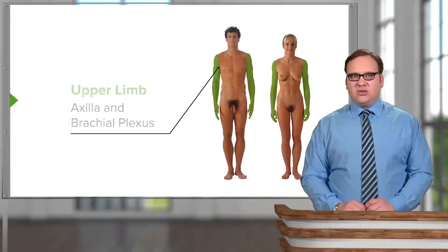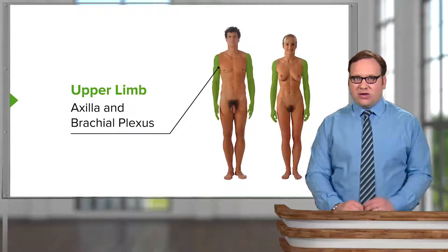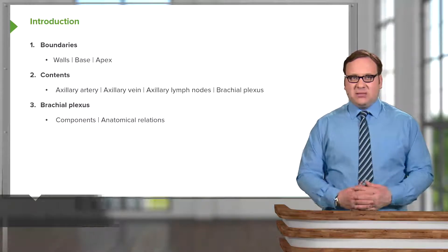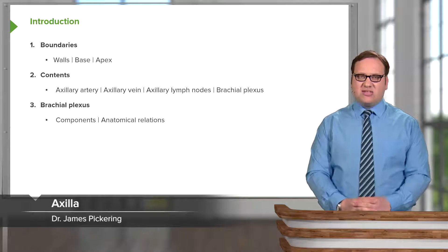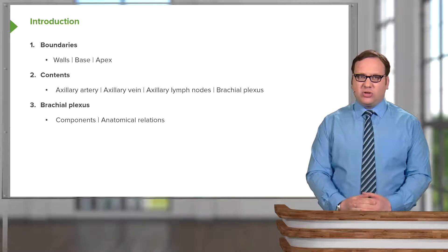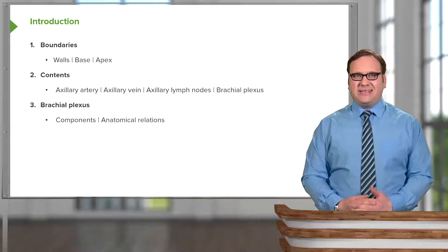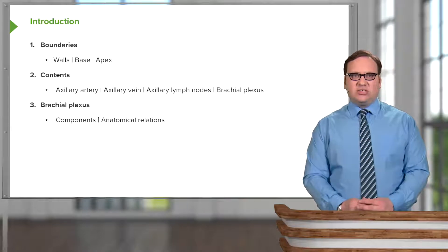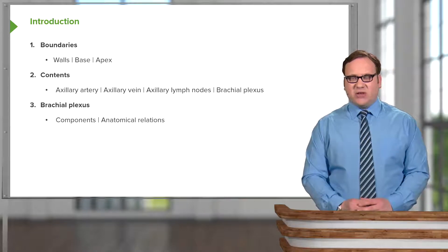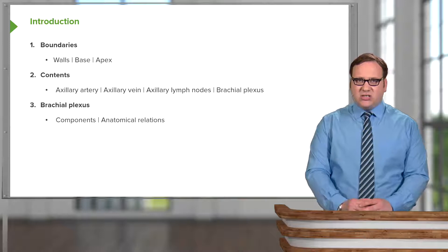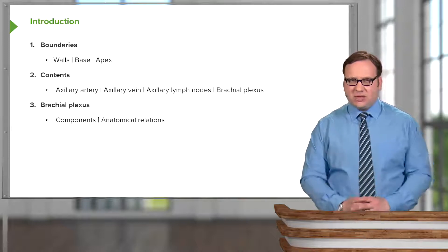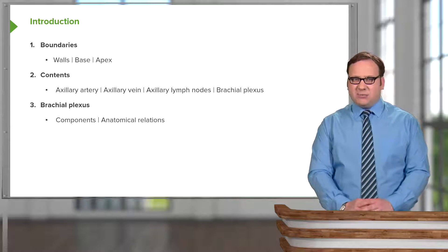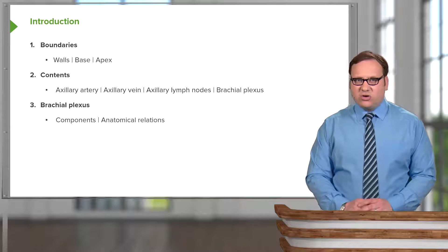In this lecture, we're going to look at the axilla and the brachial plexus. For the axilla, which is a space between the humerus and the thoracic wall, we're going to look at its boundaries — the walls, its base, and the apex. We'll look at its contents: the axillary artery, the axillary vein, and some axillary lymph nodes. We'll also look at the brachial plexus, its components, and its anatomical relations.